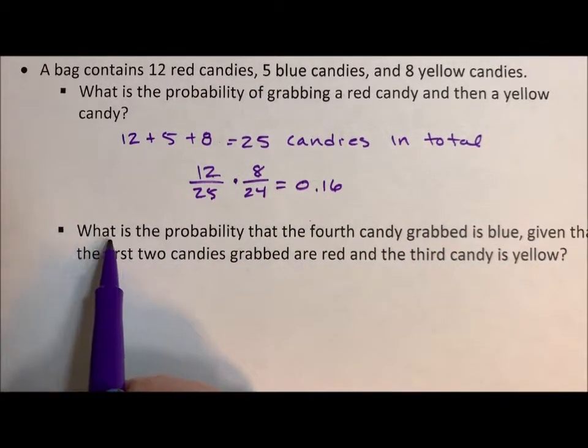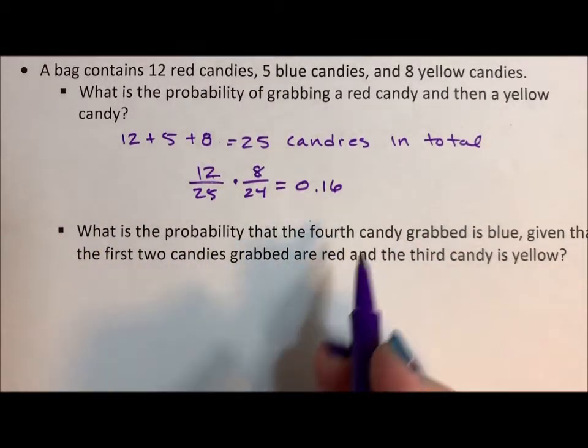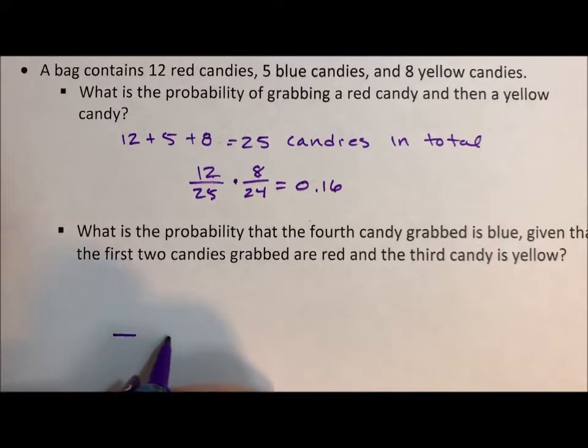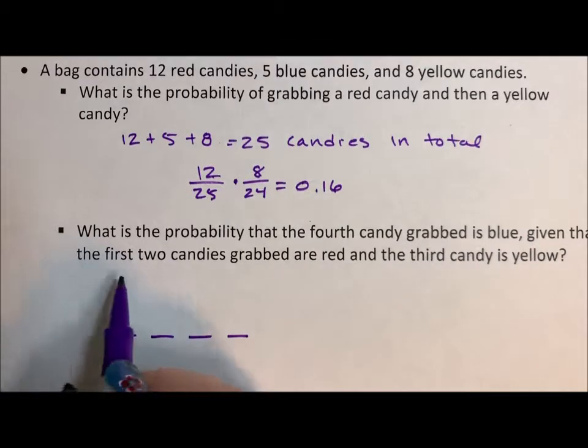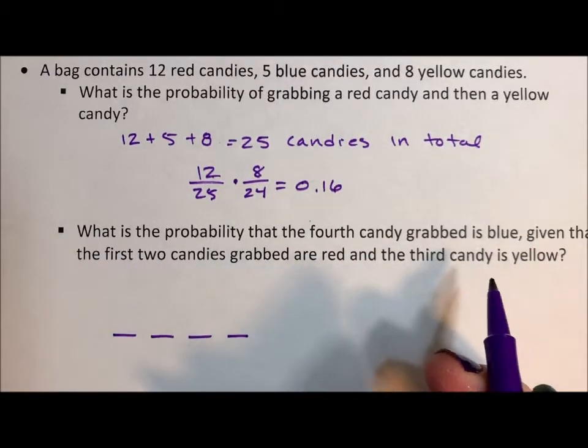This one is funny. What is the probability that the fourth candy, so 1, 2, 3, 4, you grab is blue, given that the first two candies are red and the third candy is yellow?